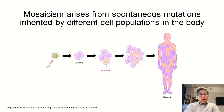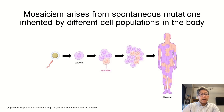Our computer program described here helps to identify these mosaic mutations by training the computer to spot them much better than a human can, using genomic sequencing data from different cell types in the body.